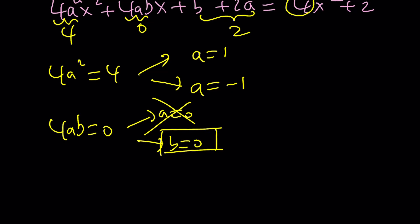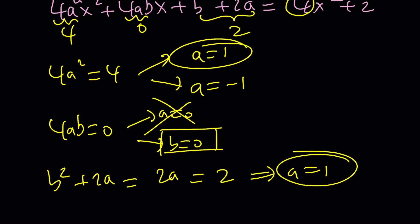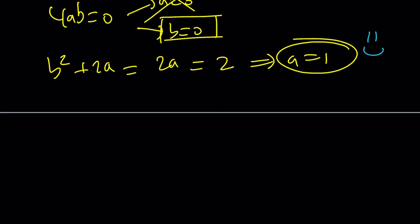Now notice that this equals 4x² + 2. So there is no x on the right hand side, so this needs to be 0. The coefficient of x² is 4, so this needs to be 4. And this needs to be 2. We get three equations. Let's start with the first one. 4a² = 4 gives us a = 1 or a = -1. We kind of have to go through both. The second one is really significant because this gives us a = 0 or b = 0. But a = 0 is impossible from the first equation. So b has to be 0.